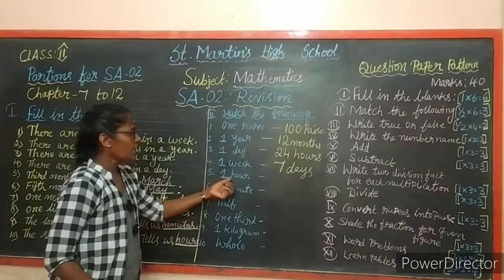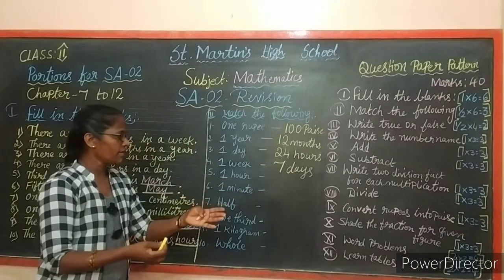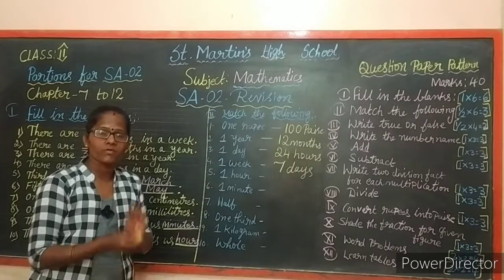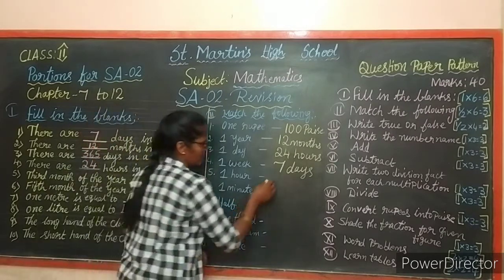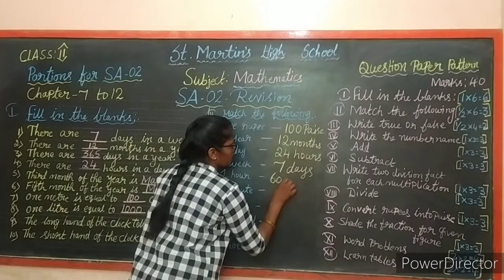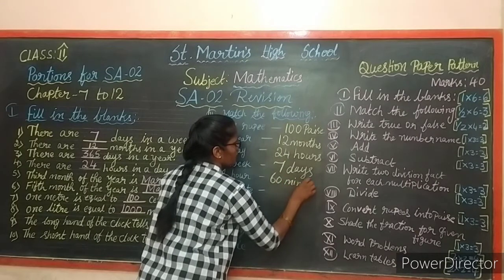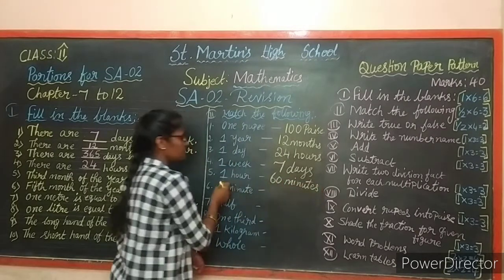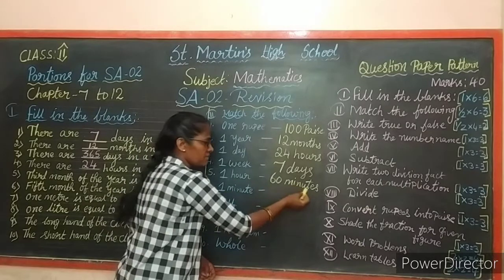Next: 1 hour has how many minutes? 60 minutes. 1 hour equals 60 minutes.